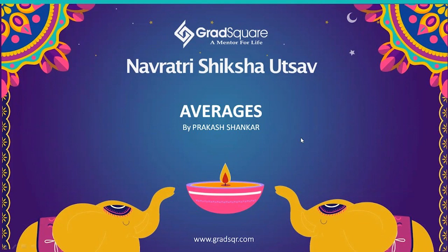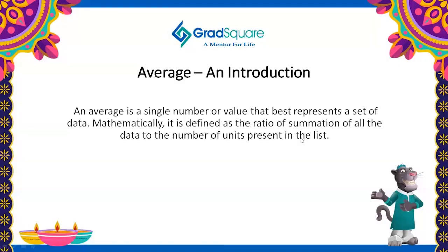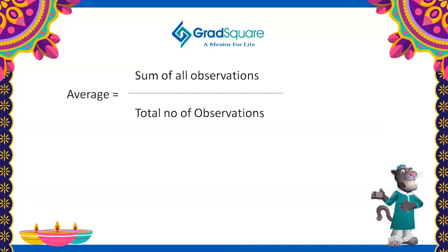In this video we are going to discuss averages. An average is a single number or value that best represents a set of data. Mathematically, it is defined as the ratio of the summation of all the data to the number of units present in the list. The formula to find an average is: sum of all observations divided by the total number of observations.